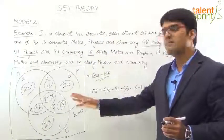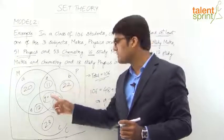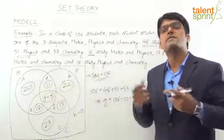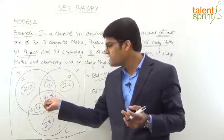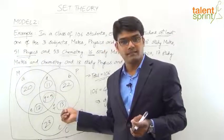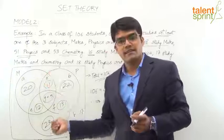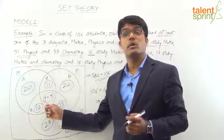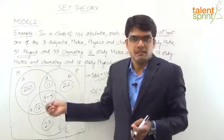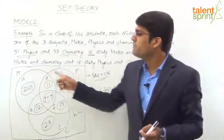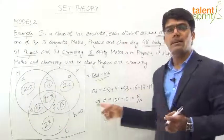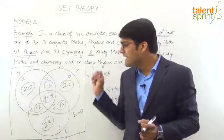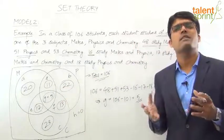That's it — once you fill all regions, we have calculated all 8 values: a, b, c, d, e, f, g, and h. Note that calculation must happen in reverse order: first find G, because without G we can't calculate D, E, F, and without D, E, F we can't calculate a, b, c. The entire Venn diagram depends on G. If G is given directly, great — start from there. If not, use the formula first to calculate G, then fill the remaining regions.